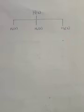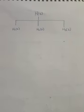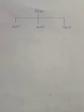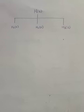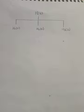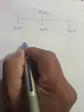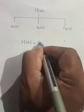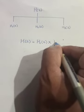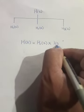So basically, by cascaded structures, the complex system H of Z will have subsystems H1, H2, H3, and so on, and they will be cascaded, meaning they will all be multiplied. So if I break down the complicated system H of Z such that the multiplication of the subsystems makes the complicated system, then we say the system is cascaded.